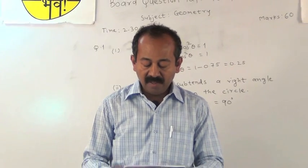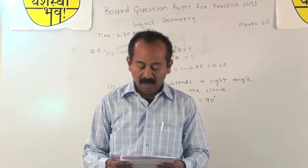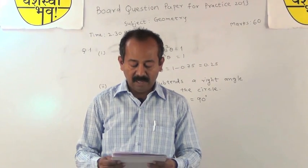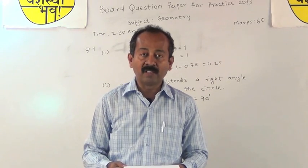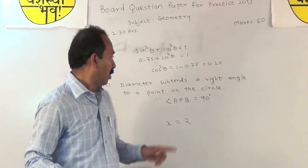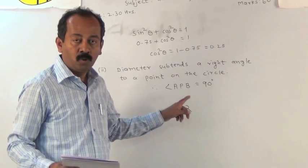Next question, what is the equation of a line parallel to the y axis and passing through point 2 comma 3? Now, line is parallel to y axis. So, the equation is x is equal to 2.